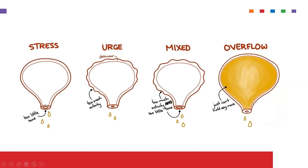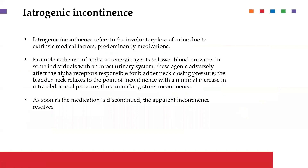To summarize the types: with stress incontinence there is too little tone on the sphincters but too much external pressure; with urge incontinence there is too much activity of the bladder, especially the detrusor muscle. In mixed incontinence you can have a combination of the two. In overflow incontinence, the tone is present but the problem is excess levels of urine accumulating in the bladder.